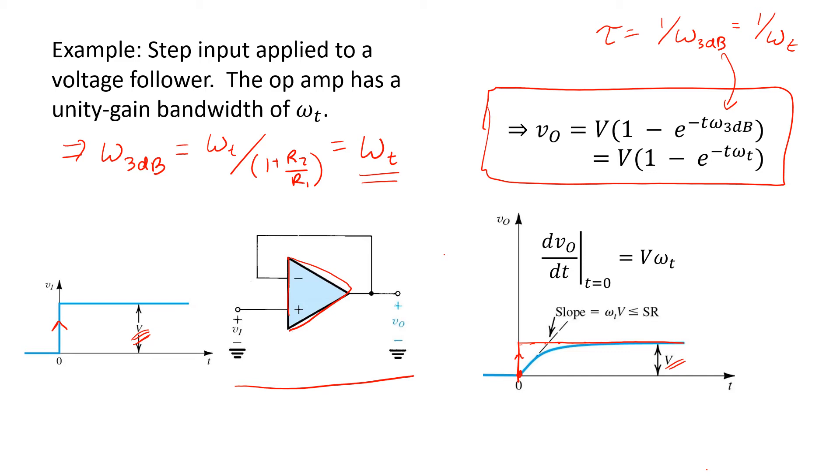An exponential settling waveform like this exhibits its highest slope right at time 0. At that point, we can find the rate of change of the output voltage by taking the derivative of this expression here and substituting in time t equals 0. Doing so straightforwardly reveals the slope of V, the step height, times the unity gain frequency of the op-amp, omega-T. And this is exactly what we would observe in the lab, so long as the step height V is not too large.